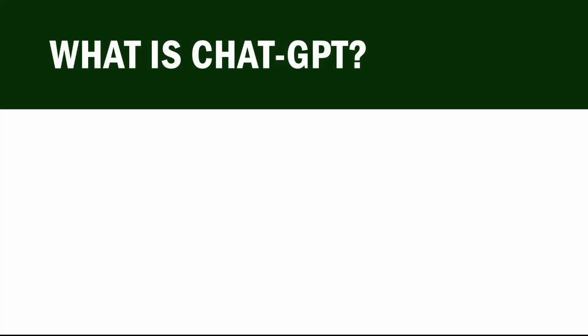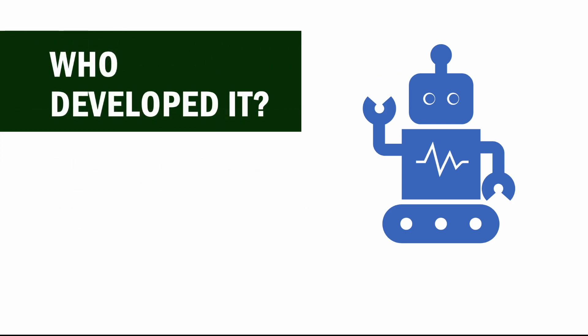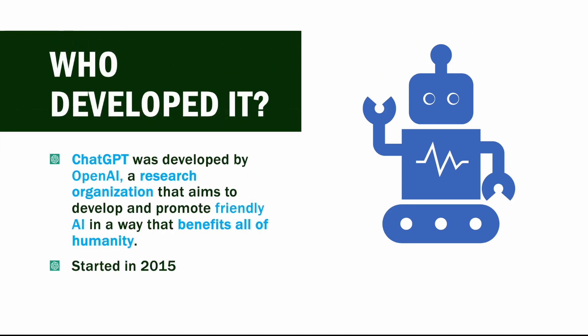ChatGPT is an OpenAI product — a conversational language model based on OpenAI. ChatGPT stands for Generative Pre-Training Transformer Architecture. It provides human-like responses using text-based inputs, working just like a bot that tries to answer your queries.